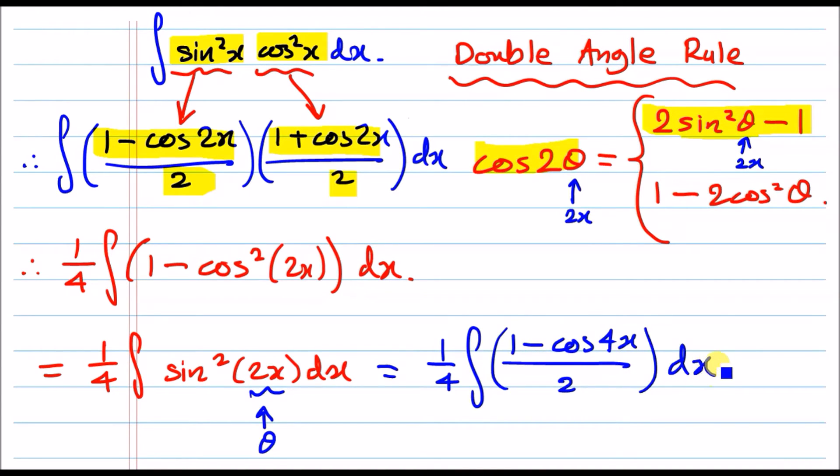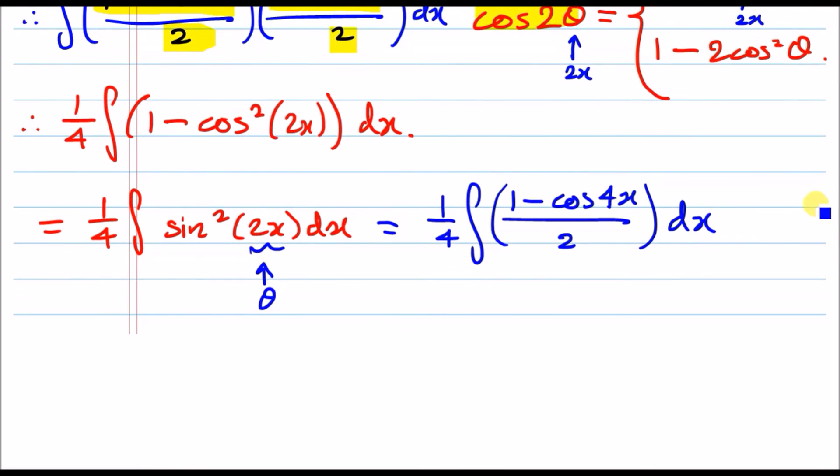And that's it. The rest is history. We just smash that down. So as always, what I do is take out a 2 to get 1 over 8, and then just deal with 1 minus cos 4x. And integrating that is easy. 1 becomes x. Cos 4x becomes sine, and the 4 goes underneath. So it becomes sine 4x over 4.